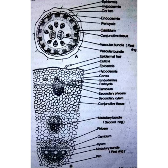Vascular bundles are present in three rings. In the innermost ring there are two large bundles, as you can see in the figure. The vascular bundles of the innermost and middle rings are called medullary bundles. The bundles are conjoint — meaning both xylem and phloem are in the same bundle — and collateral, meaning xylem is towards the center and phloem towards the periphery. It is of the endarch type. The two vascular bundles of the innermost ring are large, oval, and lie opposite to each other, with xylem facing towards the center and phloem outwards.